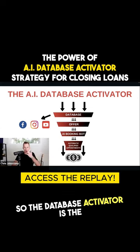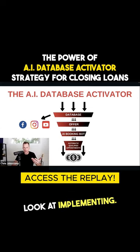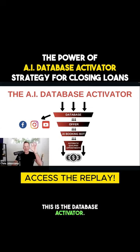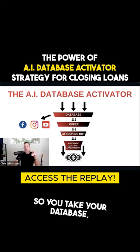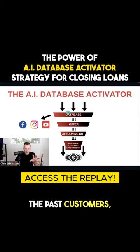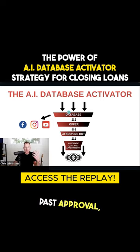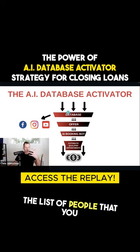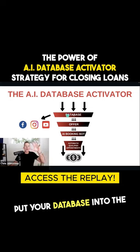The database activator is the first strategy that you should look at implementing. You take your database of past customers — some people put in their past approvals — but definitely your wedding list, the list of people that you would invite to your wedding, and put your database into the funnel.